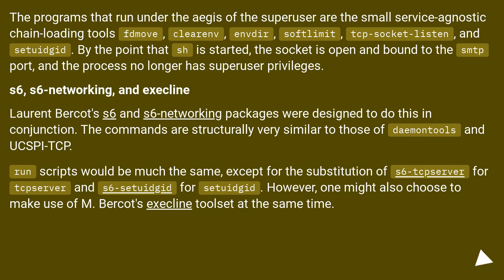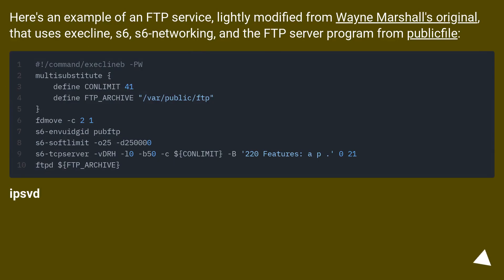Laurent Bercot's S6 and S6-networking packages were designed to do this in conjunction. The commands are structurally very similar to those of DaemonTools and UCSPI-TCP. Run scripts would be much the same, except for the substitution of s6-tcpserver for tcpserver and s6-setuidgid for setuidgid. However, one might also choose to make use of Bercot's execline toolset at the same time. Here's an example of an FTP service, lightly modified from Wayne Marshall's original, that uses execline, S6, S6-networking, and the FTP server program from publicfile.